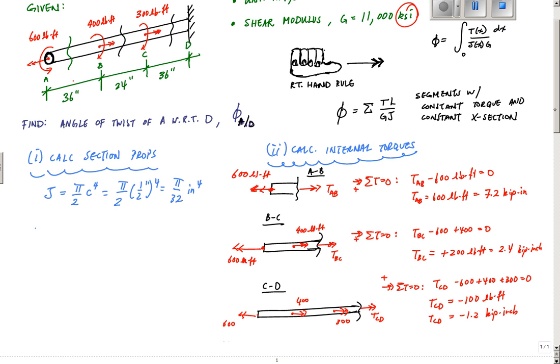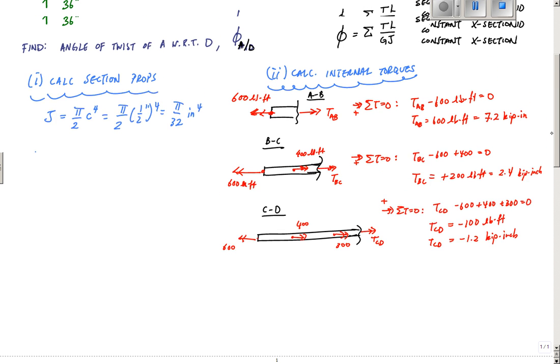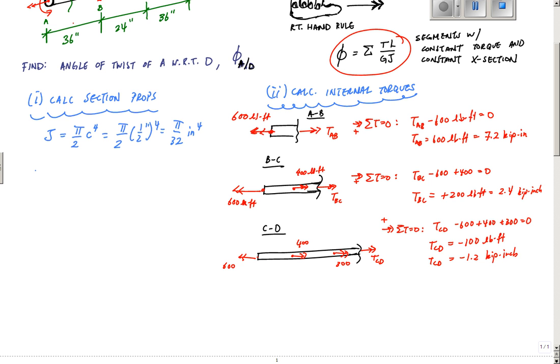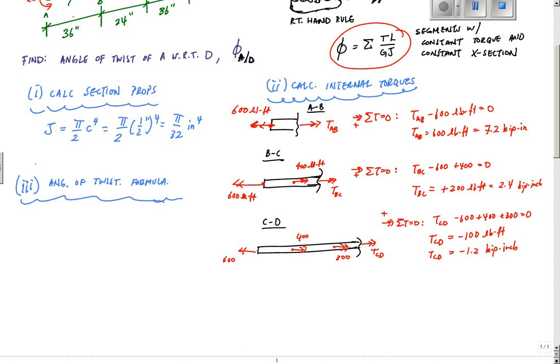We apply the angle of twist formula, the summation phi equals sum of TL over GJ. All units should cancel out, leaving radians. Phi is the sum of TL over GJ over all segments of interest, where we have constant torque and constant cross-section.